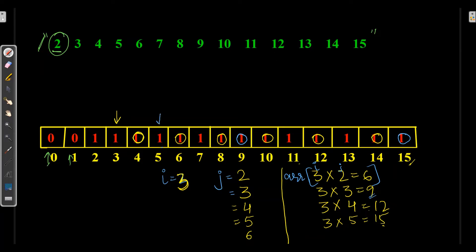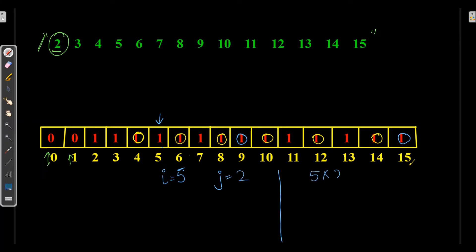The next number after 3 is 5. I equals 5. J starts with 2. 5 into 2 is 10. J equals 3: 5 into 3 is 15. J equals 4: 5 times 4 is 20, which will be greater. Array of 10 is already 0, and array of 15 is already 0.